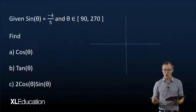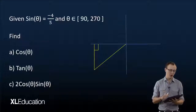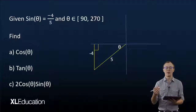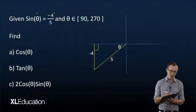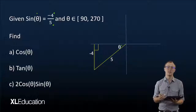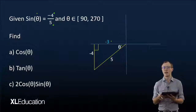We draw our Cartesian plane and then draw a right-angle triangle on it. Then we populate it with the information we already have. We were given the angle theta: negative 4 is the opposite side and the hypotenuse is 5. Then we use Pythagoras to find our missing side, and we find the adjacent side is equal to negative 3.